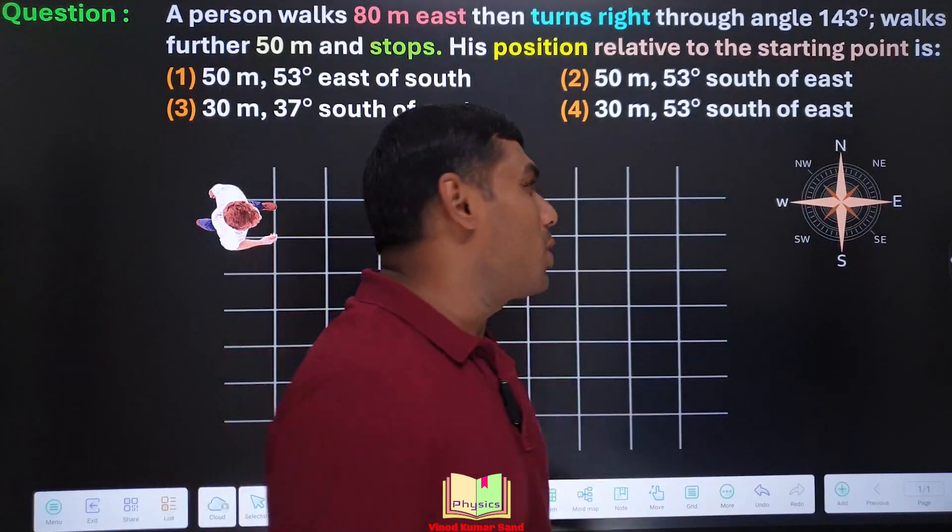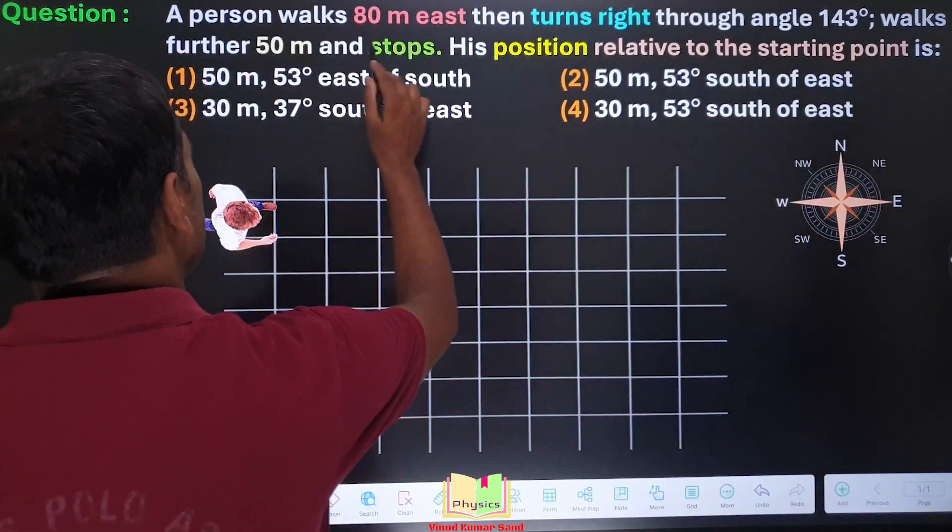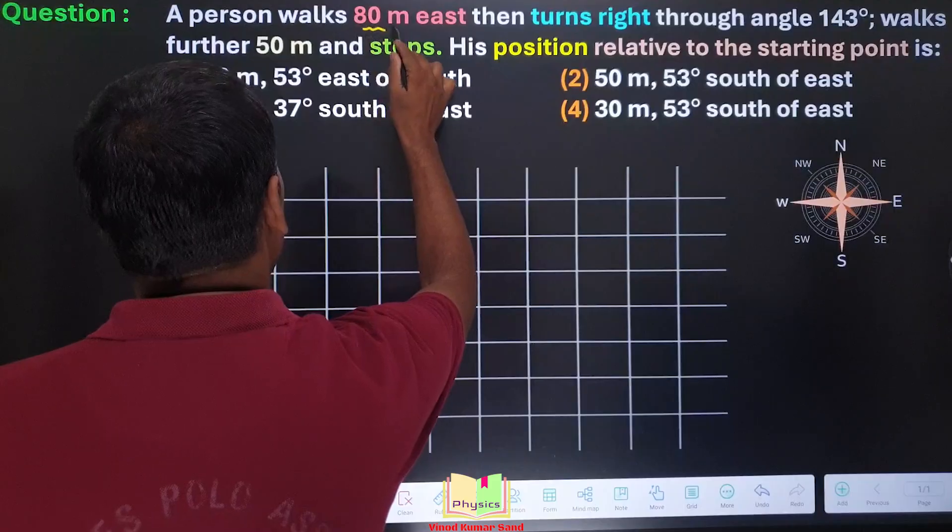Hello everyone, this is a beautiful question of kinematics. A person walks 80 meters along east.